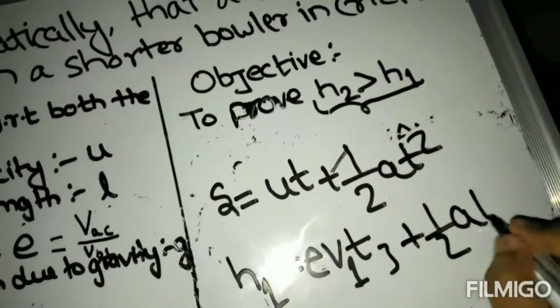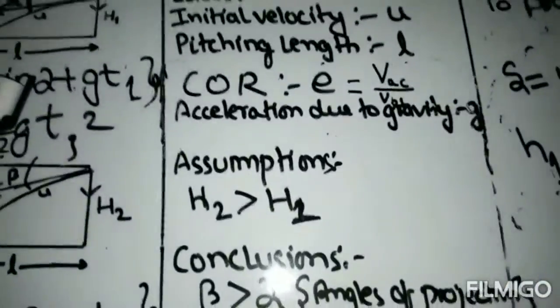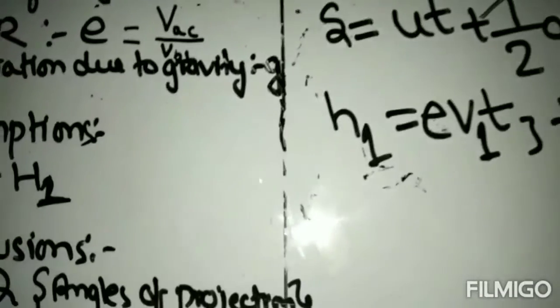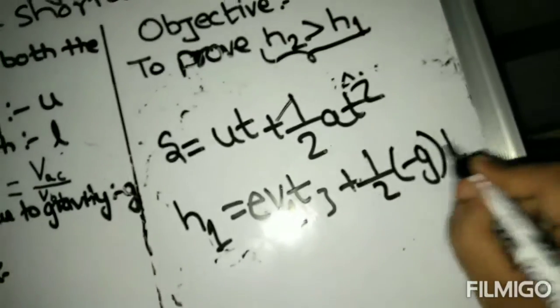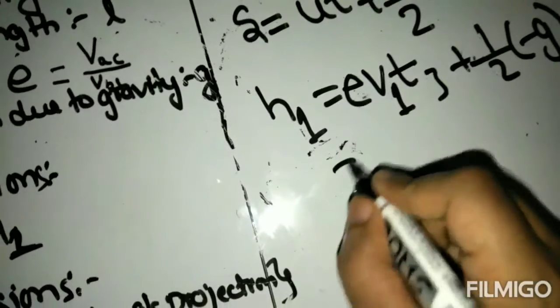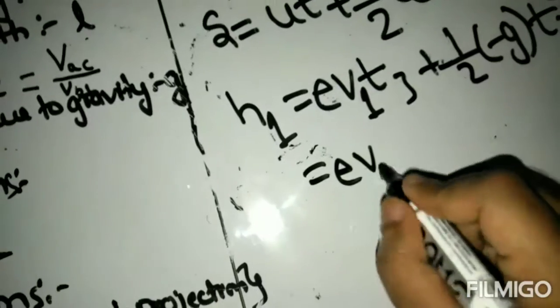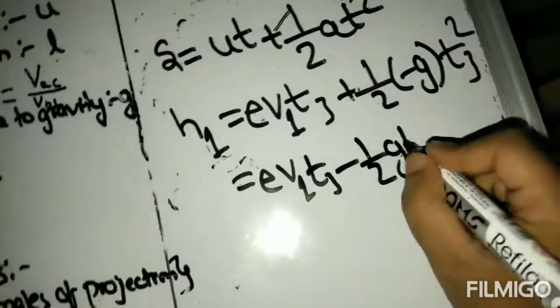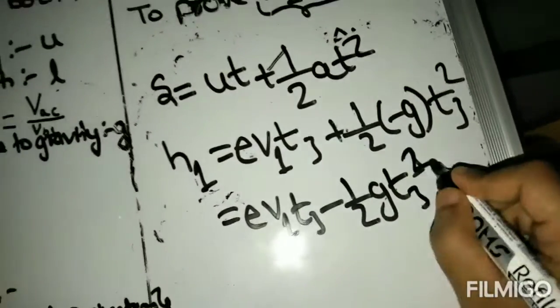A, well, a is minus g here, t3 square. Solve it further. Minus 1 by 2 gt3 square.